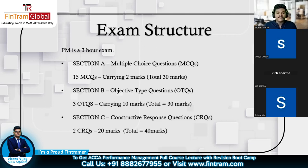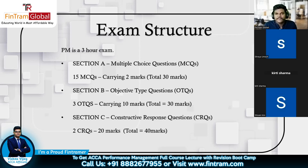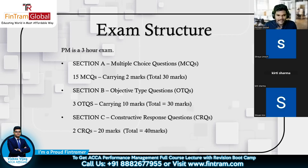There are three OTQs in Section B, each carrying 10 marks, totaling 30 marks. So a majority of marks come from multiple choice questions. There's nothing to write or type in Sections A and B — it's all MCQs, with some fun formats like drag and drop as well. Then we have Section C, which has constructive response questions, or CRQs — case study questions where you're given a scenario and some requirements.